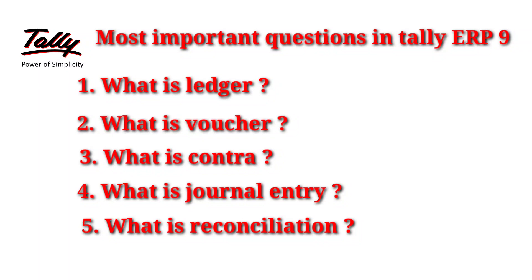Question number three: what is Contra? Contra is used for depositing money into the bank and withdrawing money from the bank. Journal entry is used for adjustments — for example, some expenses which are not yet paid and will be paid later. Those records you have to enter in the journal voucher.